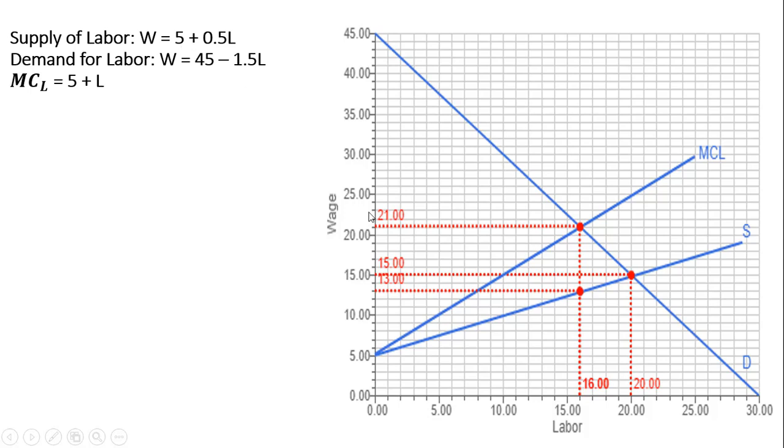The supply of labor has a vertical intercept of 5, and it has a slope of 1.5L. What we found for the competitive outcome is that the supply of labor intersected the demand for labor at a wage of 15 and 20 units of labor. So here's the competitive outcome, the supply of labor intersecting the demand for labor at a wage of 15 and L equal to 20.